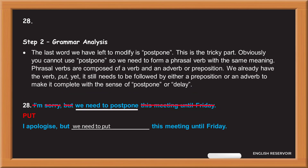The last word we have left to modify is 'postpone'. This is the tricky part — obviously you cannot use 'postpone' directly. So we need to form a phrasal verb with the same meaning. Phrasal verbs are composed of a verb and an adverb or preposition. We already have the verb 'put', yet it still needs to be followed by either a preposition or an adverb to complete it with the sense of 'postpone' or 'delay'.